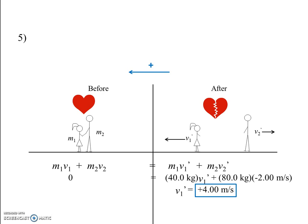Hopefully you got positive 4 meters per second. The positive sign means she's going to the left — our positive direction — which makes sense. He's moving at 2 m/s while she moves at 4 m/s because of the difference in mass. His momentum is 80 times negative 2, which is 160 kg·m/s to the right. She must have 160 kg·m/s to the left to balance back to zero — and since she has half the mass, she goes at twice the speed.